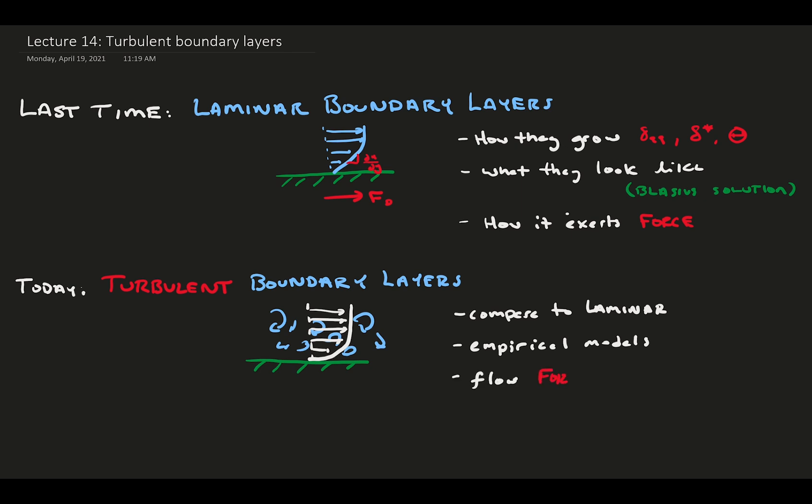Then, we can't do much theoretically, so we'll have to use empirical relations to describe the shape and size of the boundary layer. Lastly, we'll use the same procedure as for laminar boundary layers to find the forcing on the wall, or the drag force. Alright, let's jump in.